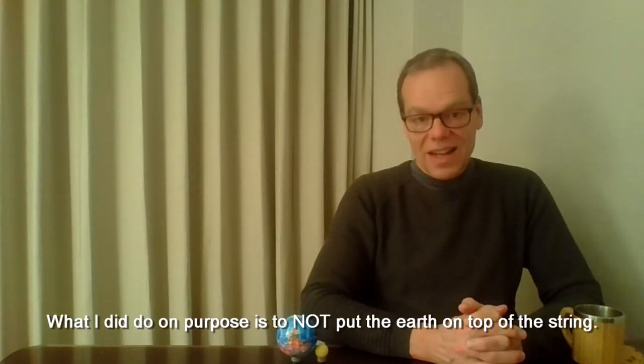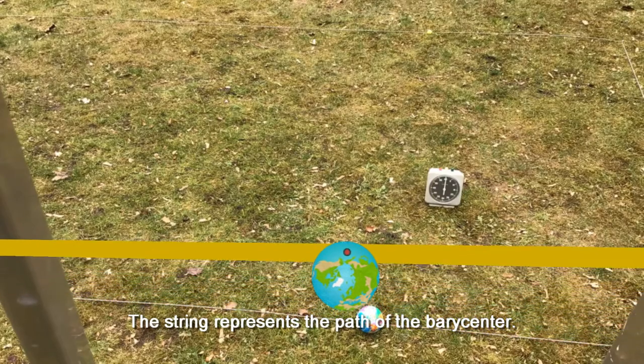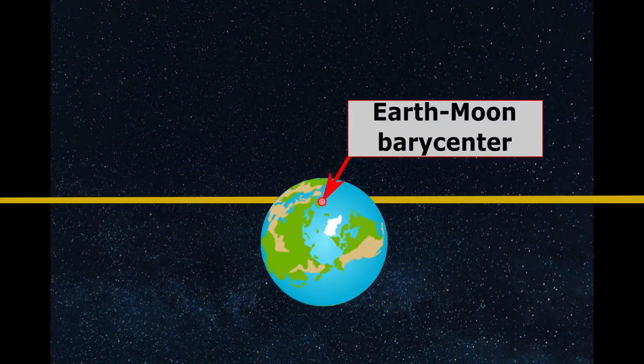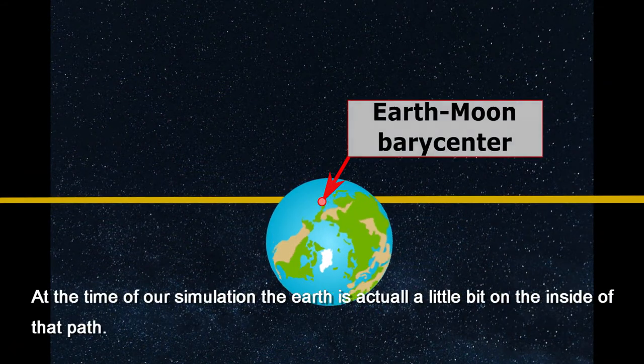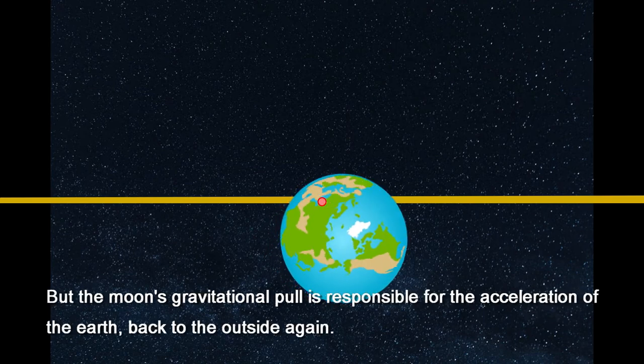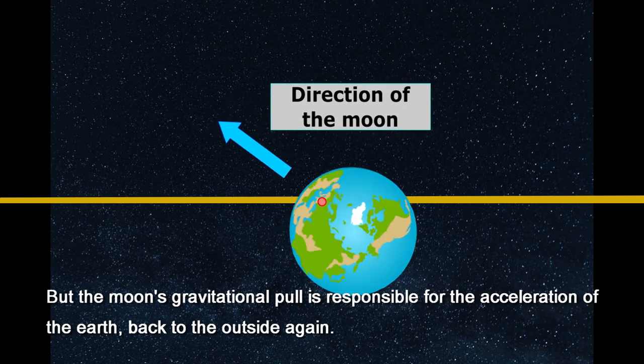What I did do on purpose is not to put the Earth on top of the string. The string represents the path of the barycenter, that is the common center of mass for the Earth and the Moon. At the time of our simulation, the Earth is actually a little bit on the inside of that path. But the Moon's gravitational pull is responsible for the acceleration of the Earth back to the outside again.